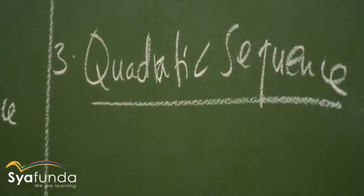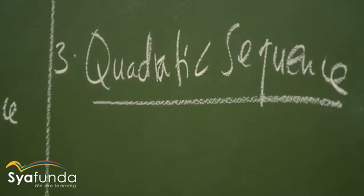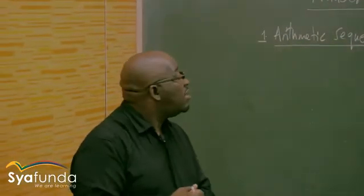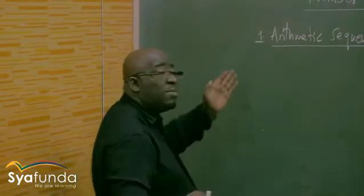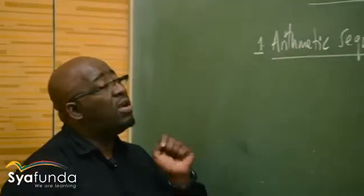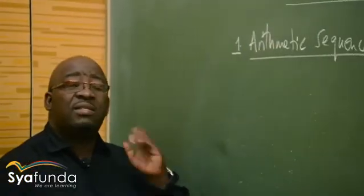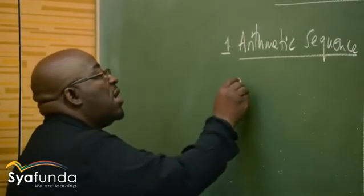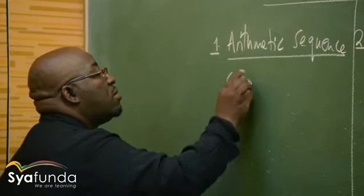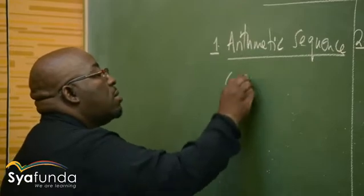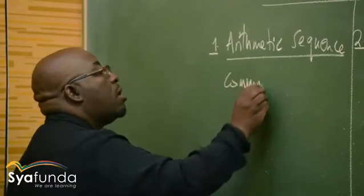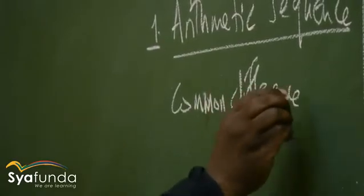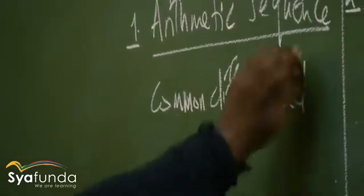These are the three types of sequences that I want us to look at today. Now how do you identify these sequences? If we're talking about the arithmetic sequence, the only way that we can identify it is that it should have a common difference, which we will refer to as d.